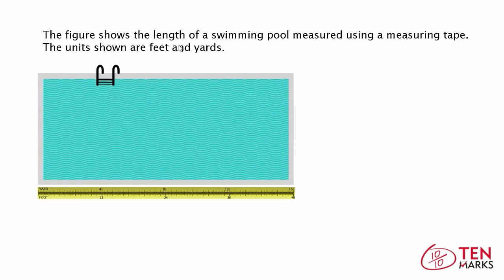Now this figure shows the length of a swimming pool measured using a measuring tape. The units in the measuring tape are feet and yards, as you can see here. Here's the foot, and here is the yard. So the pool is 48 feet or 16 yards long.